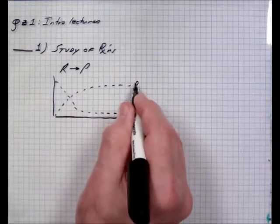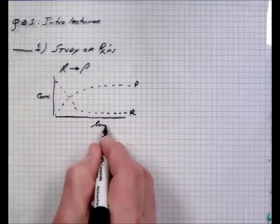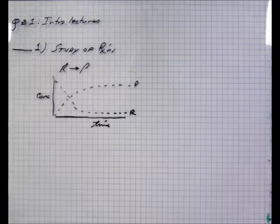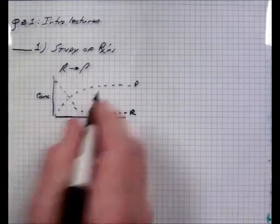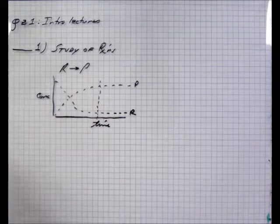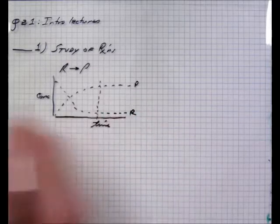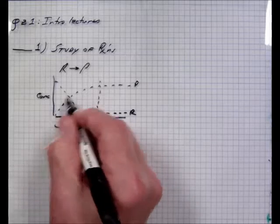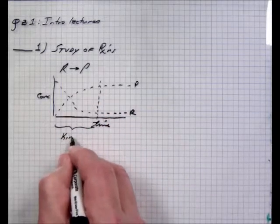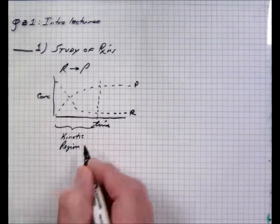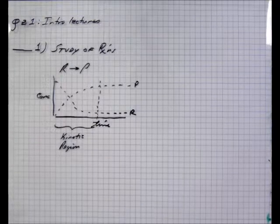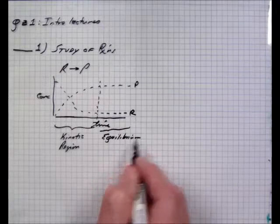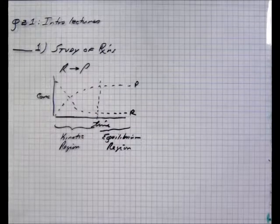Reactants going to products are first examined in terms of kinetic rates. The issue here is that in this graph we're talking about concentration of reactants and products over time. Up until a certain point we're talking about kinetics - that is, the slope at any point is constantly changing. There's a point where the slope becomes zero, and that is the point that divides the kinetic region from the equilibrium studies. We refer to this as the kinetic region.